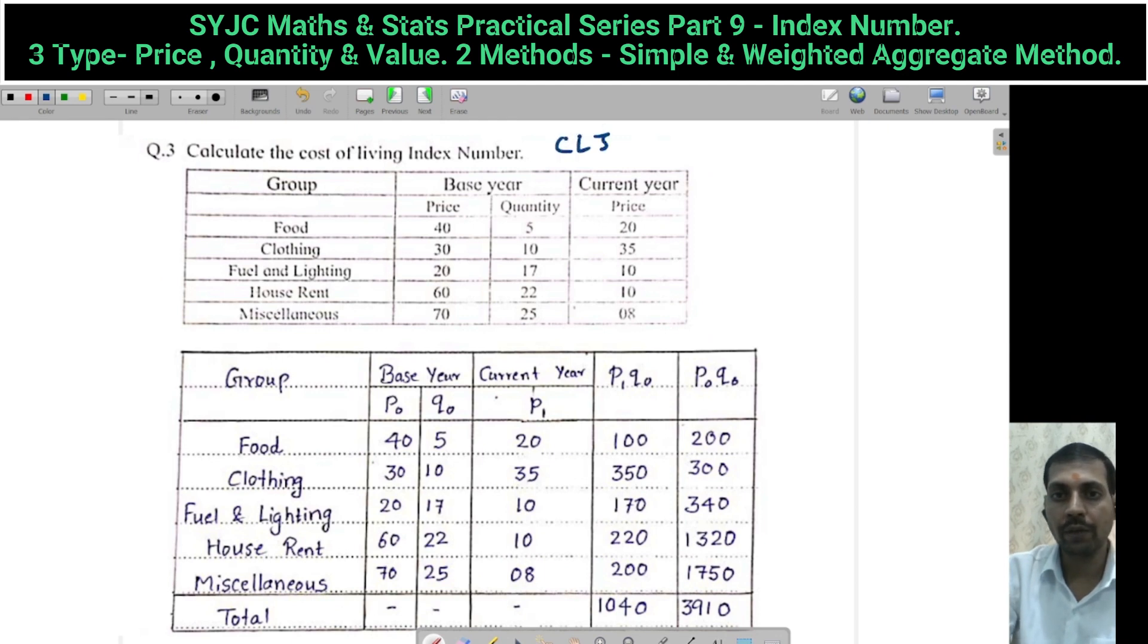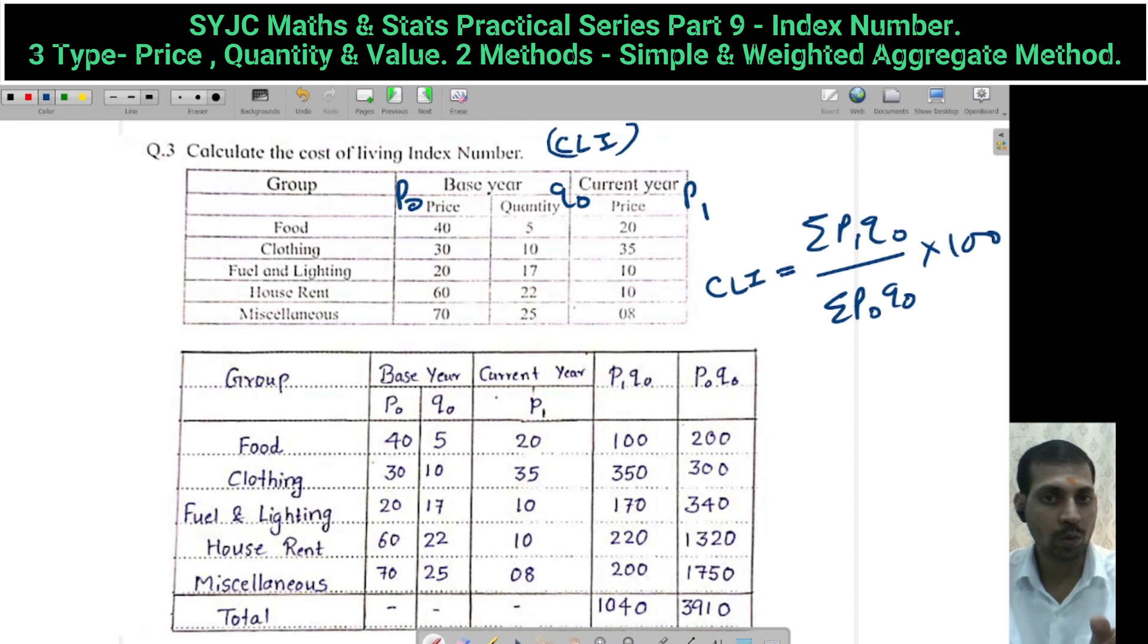This is CLI, cost of living index number. You have P0 given, Q0 given, and P1 given current year. Then when P0Q0 and P1 are there, use formula: summation P1Q0 upon summation P0Q0 into 100. This is CLI formula, the same formula we can use for cost of living index number. So you have to calculate P1Q0 and P0Q0.